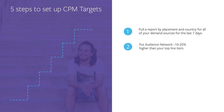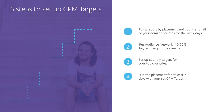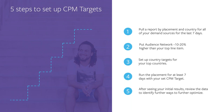To set up CPM targets: first, pull a report by placement and country for all your demand sources for the last seven days. Then put Audience Network at the top of your waterfall with a CPM target about 10 to 20% higher than your existing top line item, so everything returned will be at a higher price point. Set up country targets for your top countries. Run the placements for at least seven days to ensure you receive enough historical data to accurately calibrate your CPM targets. Finally, review the data to identify further ways to improve your fill rate for that placement.